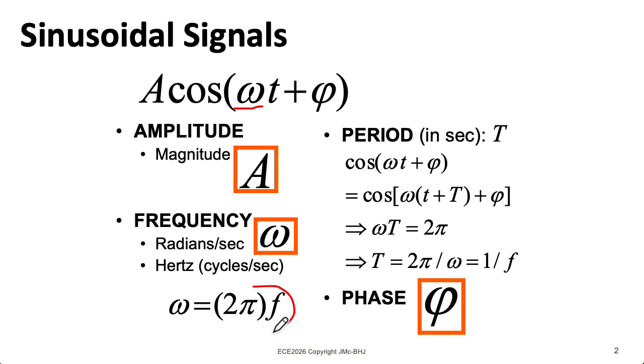We can relate that to the frequency in hertz by multiplying the frequency in hertz by 2π. The period of the signal is going to be 1 over f, or equivalently 2π over omega.